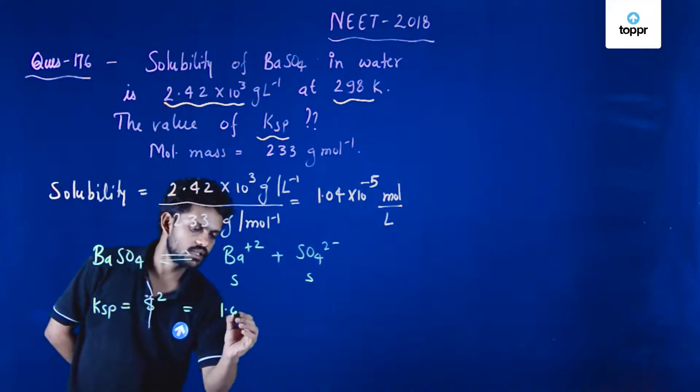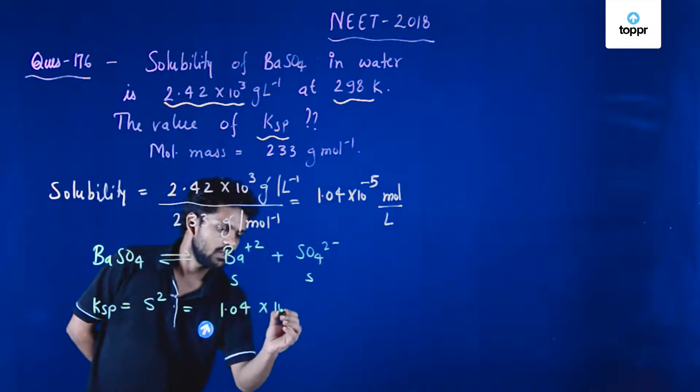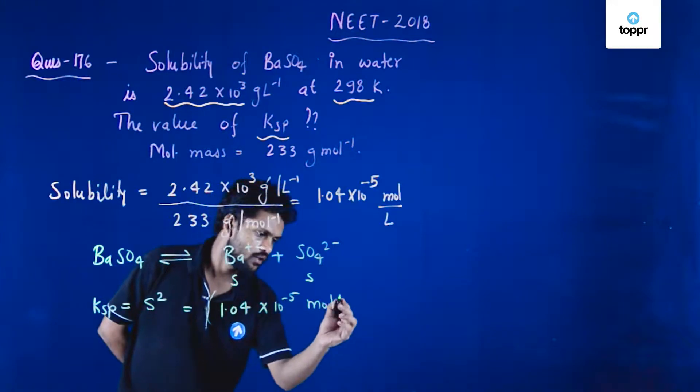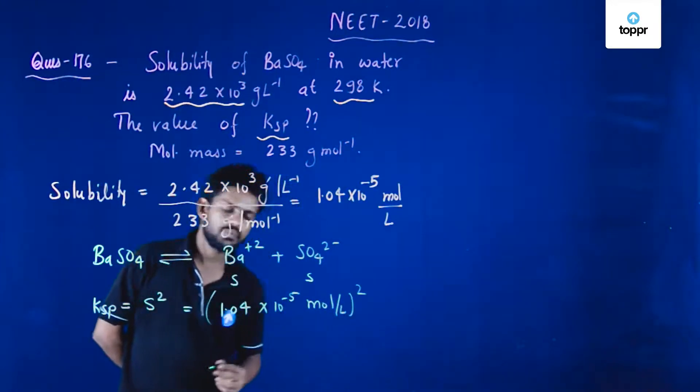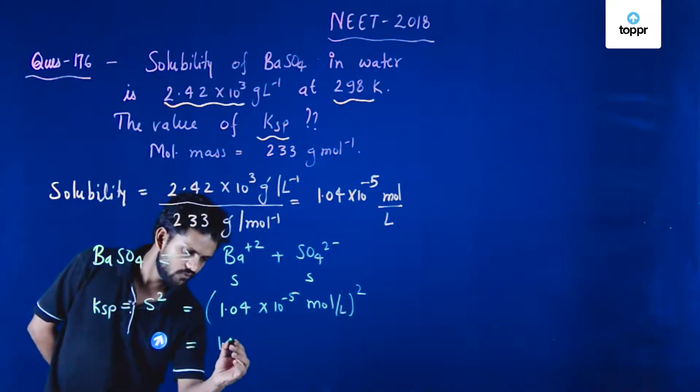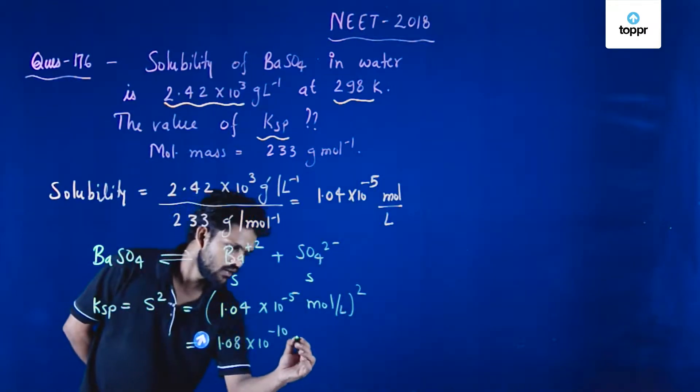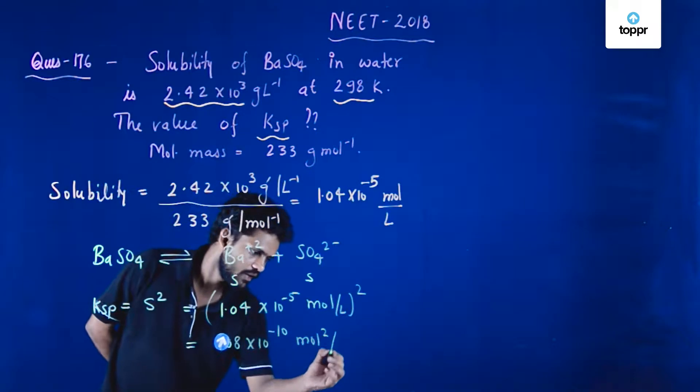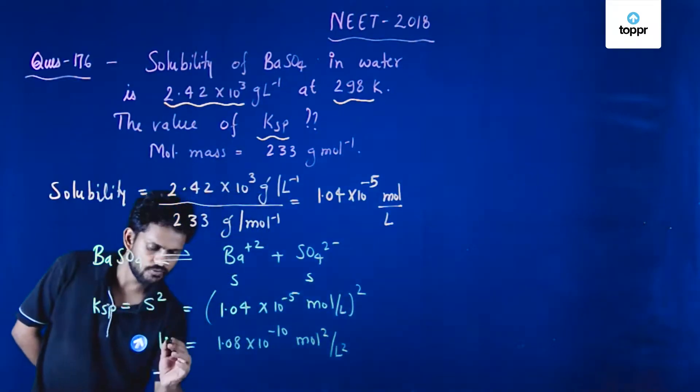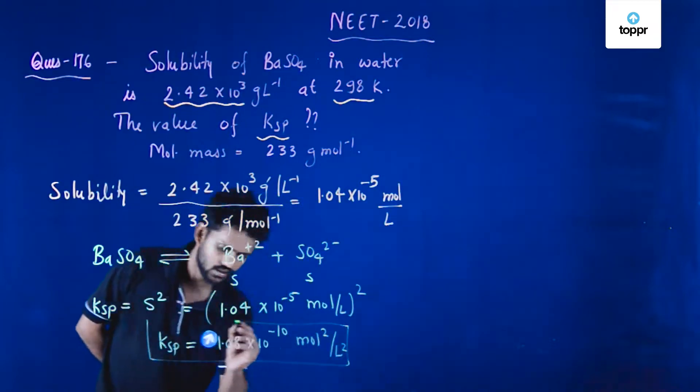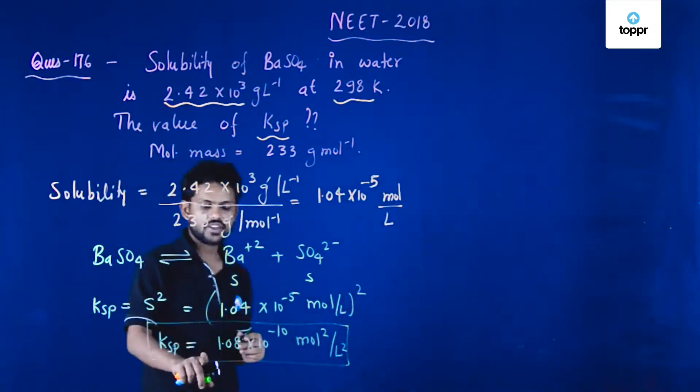What we can do is simply square this value of 1.04 × 10^-5 moles per liter. If we square it, we get 1.08 × 10^-10 mole squared per liter squared. This is the value of Ksp, and I think this is option number 2, which is the correct option.